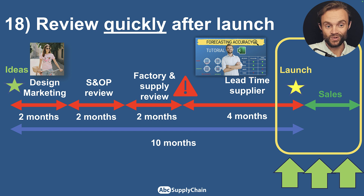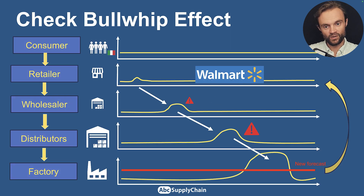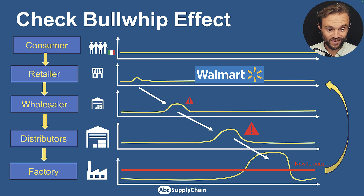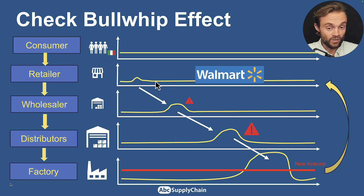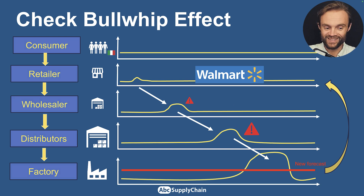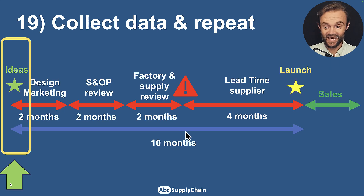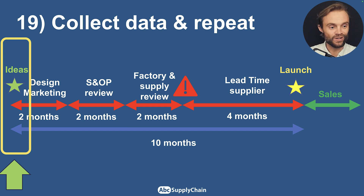Make sure you can readjust quickly, not just once but multiple times. Also watch out for the bullwhip effect — make sure you're seeing reality. For example, when selling cosmetics to supermarkets, I wasn't selling directly to consumers. The supermarket was buying a lot, but I didn't know if it was actually working at the consumer level. I had to ask retailers or pay for data to find out if my products were really selling. Be careful of the bullwhip effect — always check from the source of your sales. Collect all this data to repeat the process and make it even more efficient for the next launch.